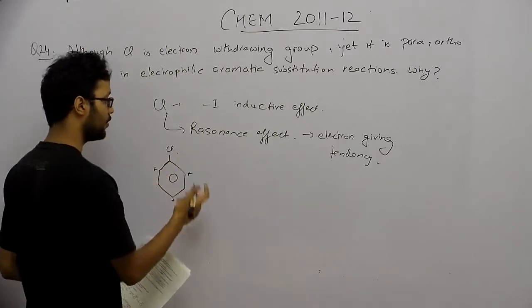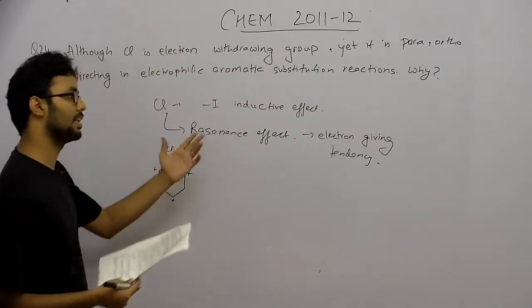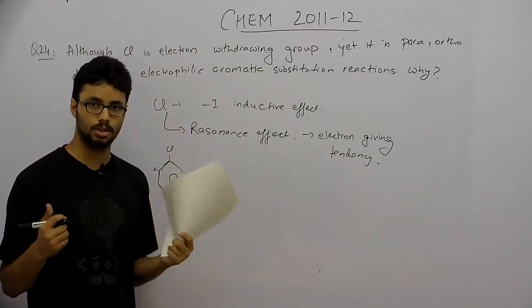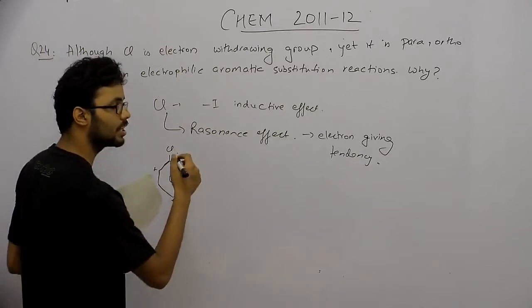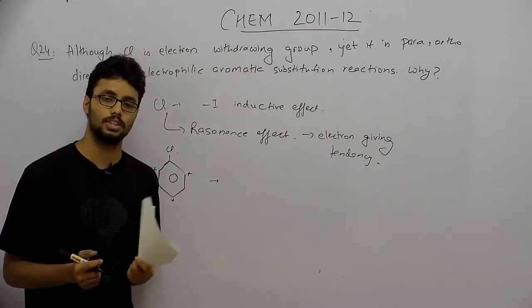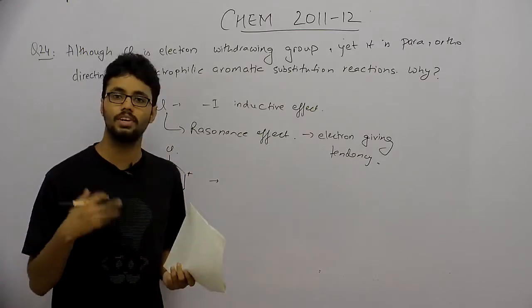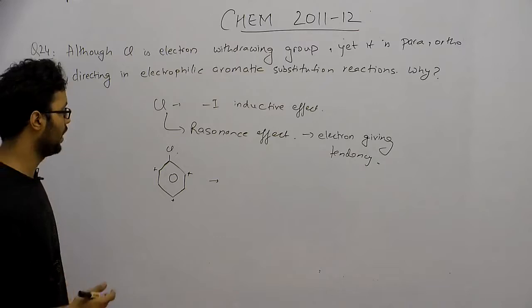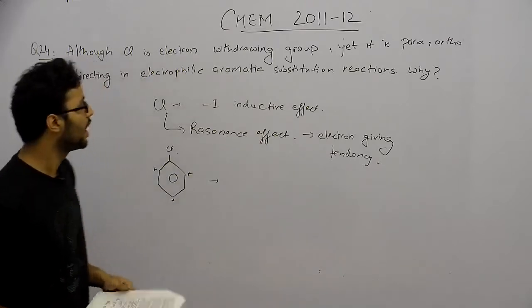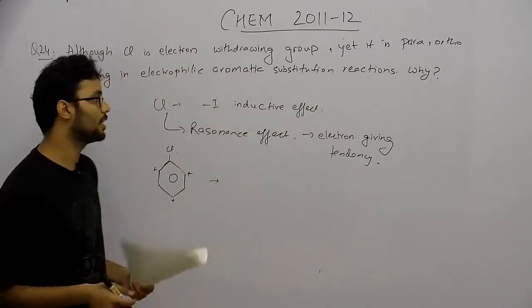By the inductive effect, if a carbocation is formed at the meta position, it is not stabilized — furthermore, it is destabilized by the electron-withdrawing tendency. Since this carbocation is an intermediate in the electrophilic aromatic substitution reaction, and an intermediate must be stabilized to increase the reactivity, chlorine stabilizes the carbocation at ortho and para positions. Therefore, chlorine is known as an ortho/para director in electrophilic aromatic substitution reactions.